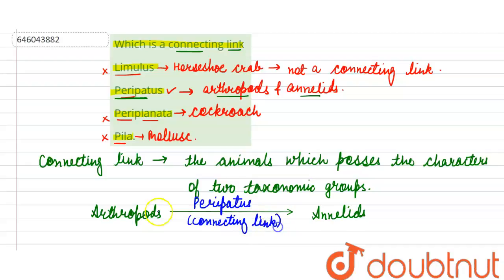Now, Peripatus has the characteristics of both arthropods and annelids. It has arthropod characters like claws, jaws, haemocoel, trachea, and dorsal tubular heart.